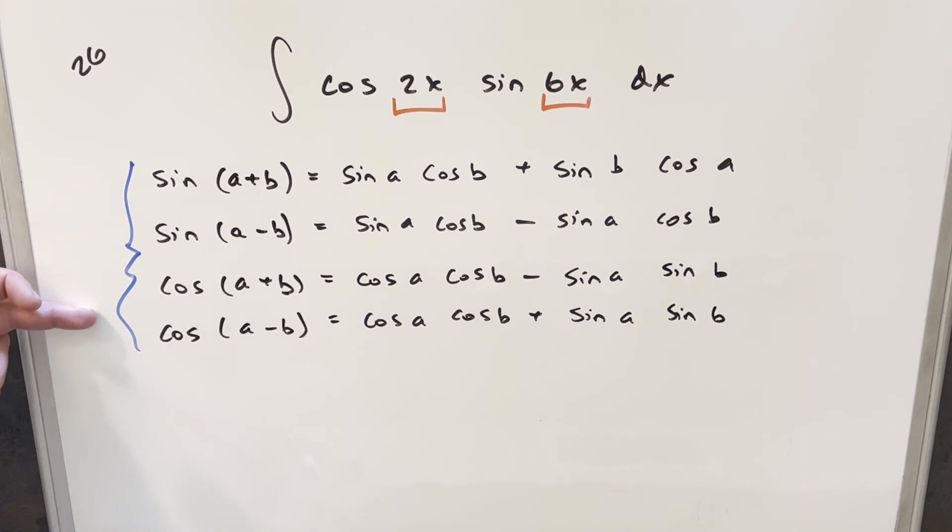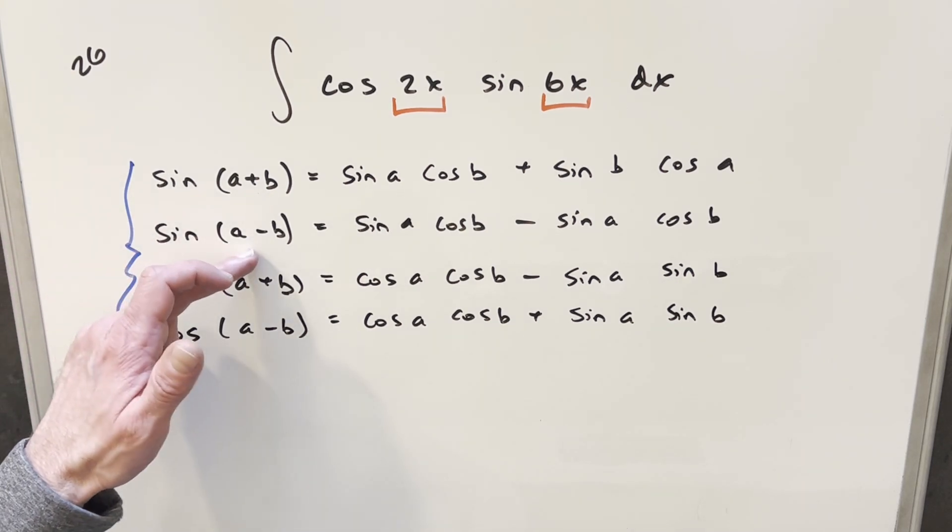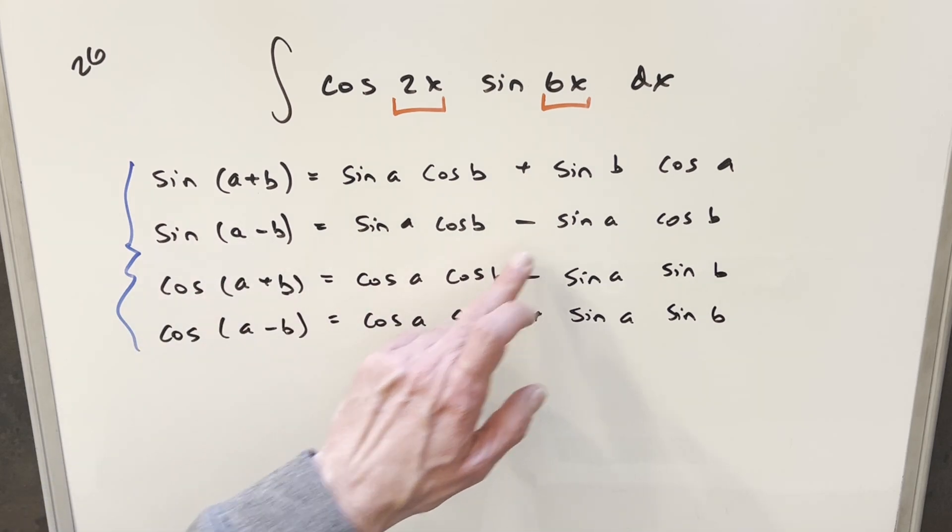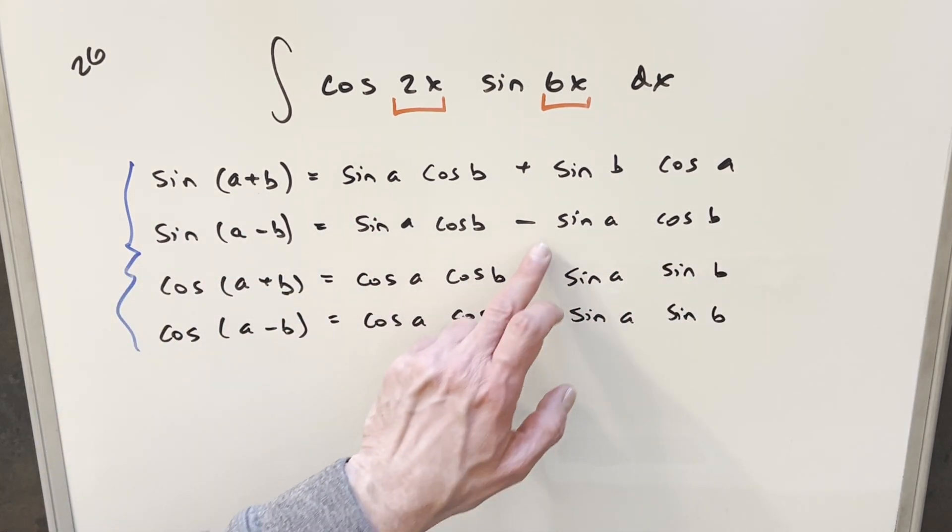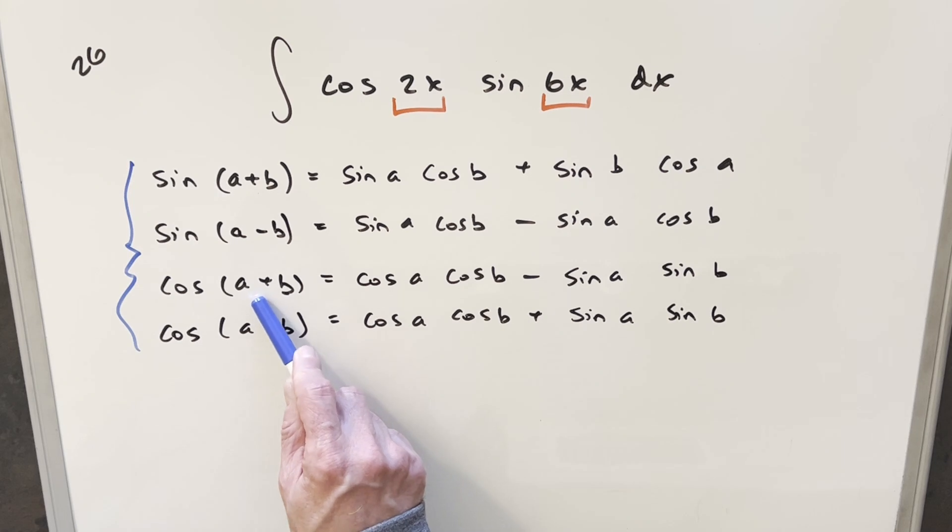But you might be thinking, what if I can't remember these formulas? Now for one thing, we don't really need all four of these because for the angle difference formulas, notice only the sign is changing. Like the first formula and second formula are exactly the same except for the sign. And the same thing is true here with the cosine formulas. Only the sign is changing here.